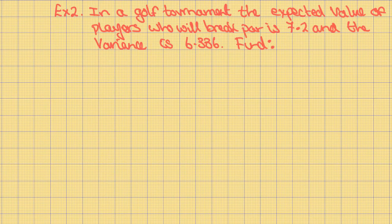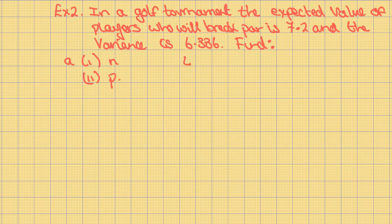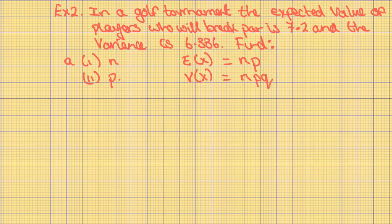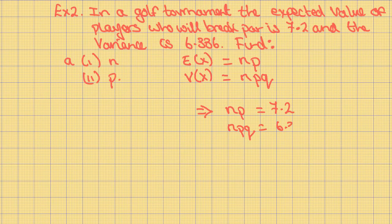Example 2. In a golf tournament, the expected value of players who will break par is 7.2, and the variance is 6.336. Find A part 1, N, and A part 2, P. We know the expected value in a binomial distribution is equal to NP, and the variance is equal to NPQ. Therefore, NP is equal to 7.2 and NPQ is equal to 6.336.